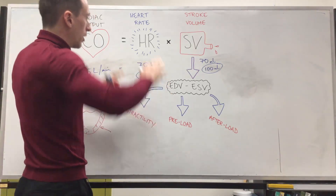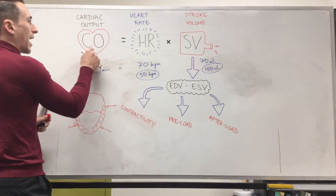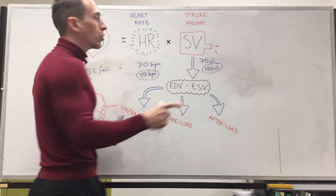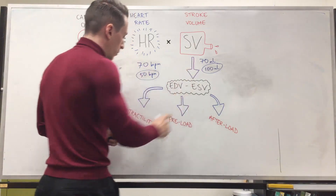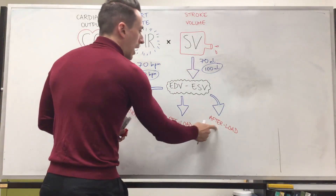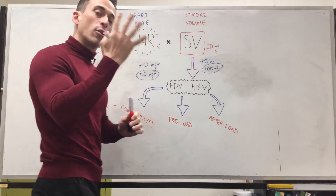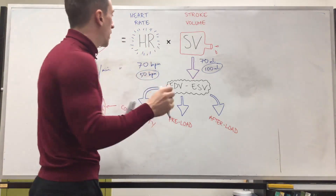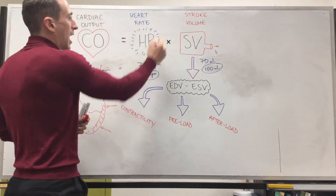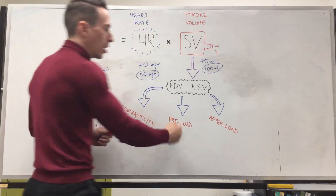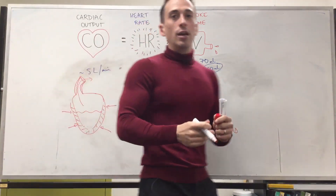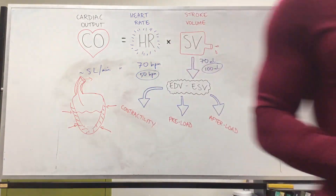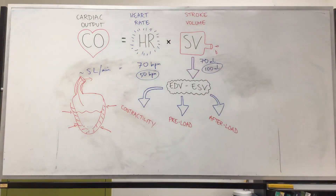To quickly summarize: cardiac output is heart rate multiplied by stroke volume. Stroke volume is influenced by contractility, preload, and afterload. So there are four factors that influence how much blood the heart pumps out per minute: heart rate, contractility, preload, and afterload. That is a quick run through of cardiac output.